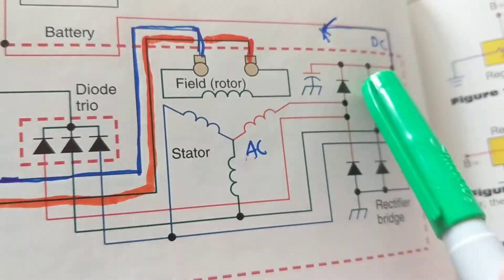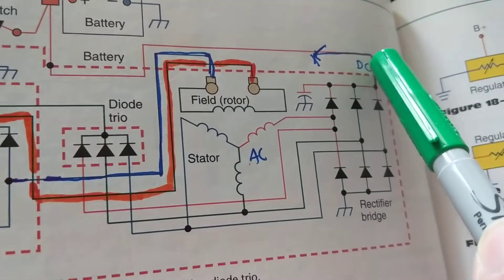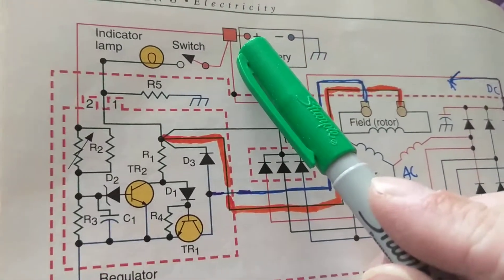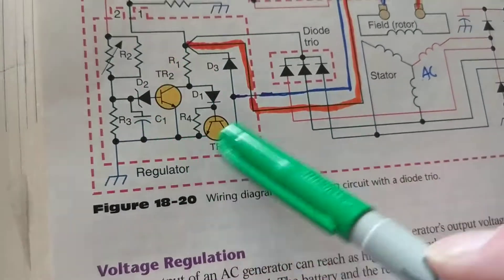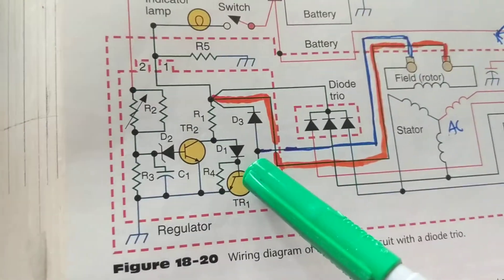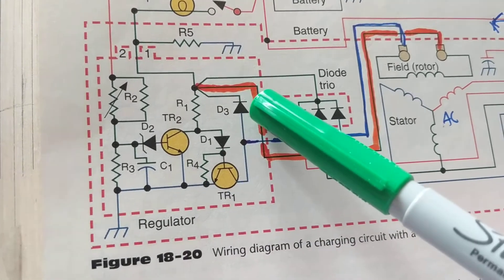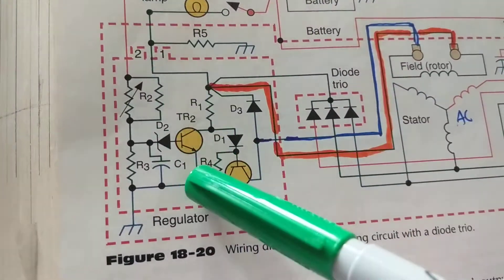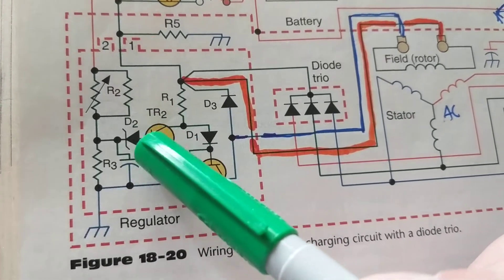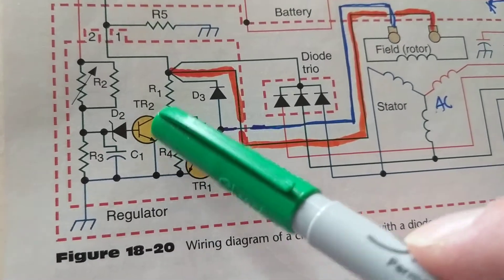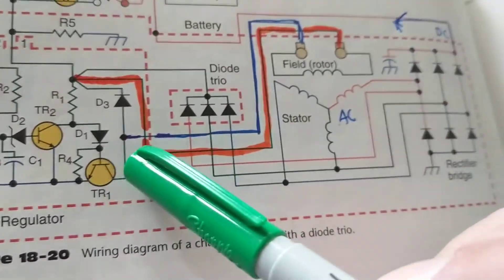The output comes over here and goes to the battery — this is the B+ that we always see going to the battery. The battery also gives DC to our internal regulator, which is packed inside the alternator. You need DC to bias this — there's a zener diode here that turns on a transistor.